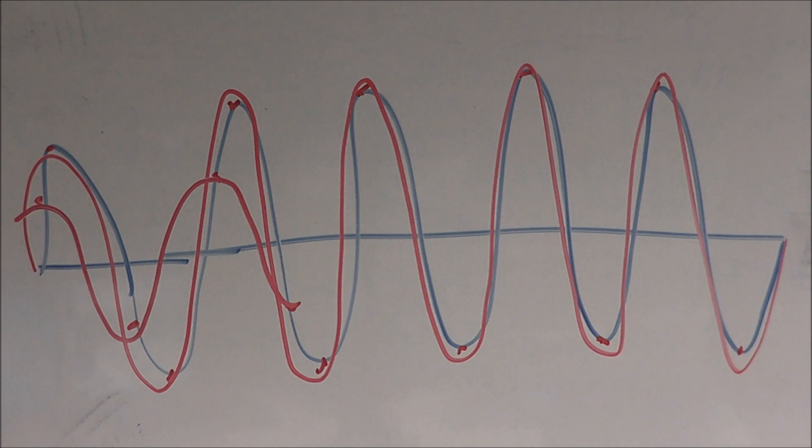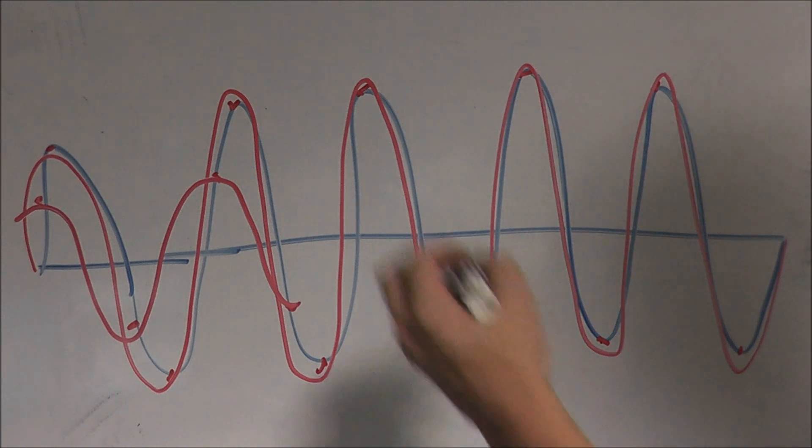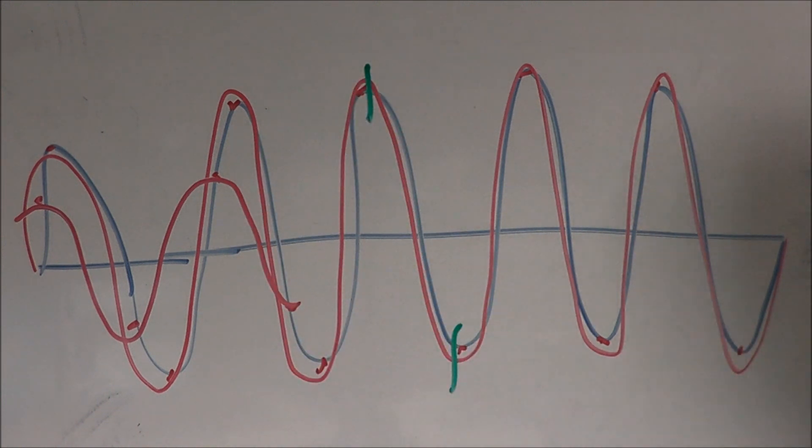Recapping on what we've learned, it really makes sense why we need a sampling rate twice that of our frequency. For every period of our waveform, we have one peak and one trough, which gives us two critical points. If we sample at this minimum rate, we can obtain a somewhat loose interpretation of our true waveform.